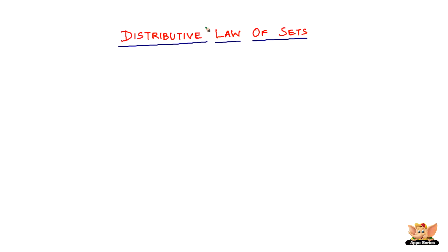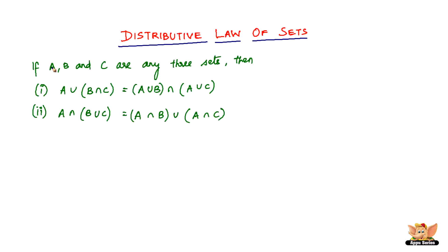In this video, let us look into the distributive law of sets. If A, B, and C are any three sets, then A union of B intersection C will be equal to A union B intersection A union C. So A union of B intersection C equals A union B intersection A union C is for the union operation on sets.